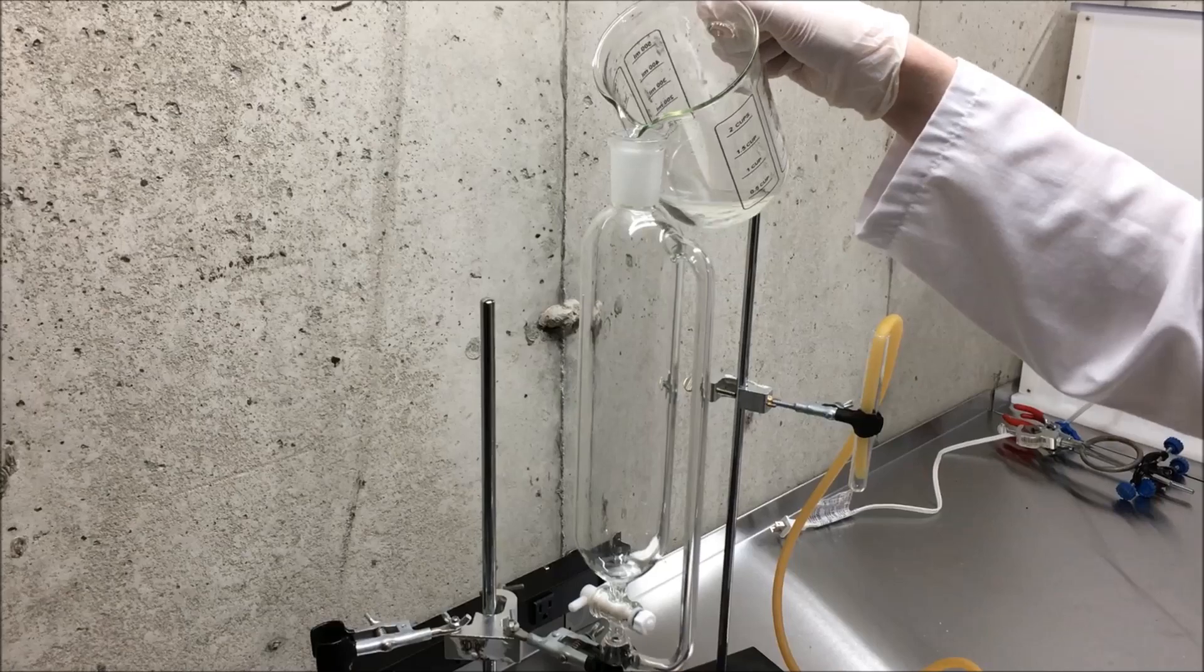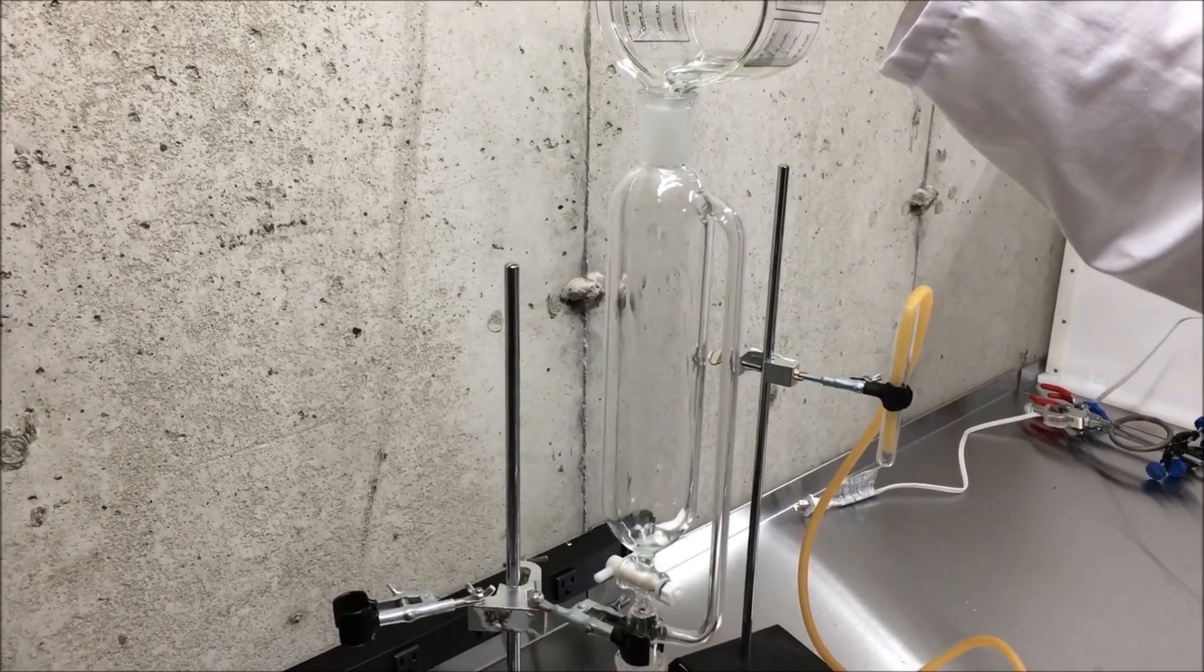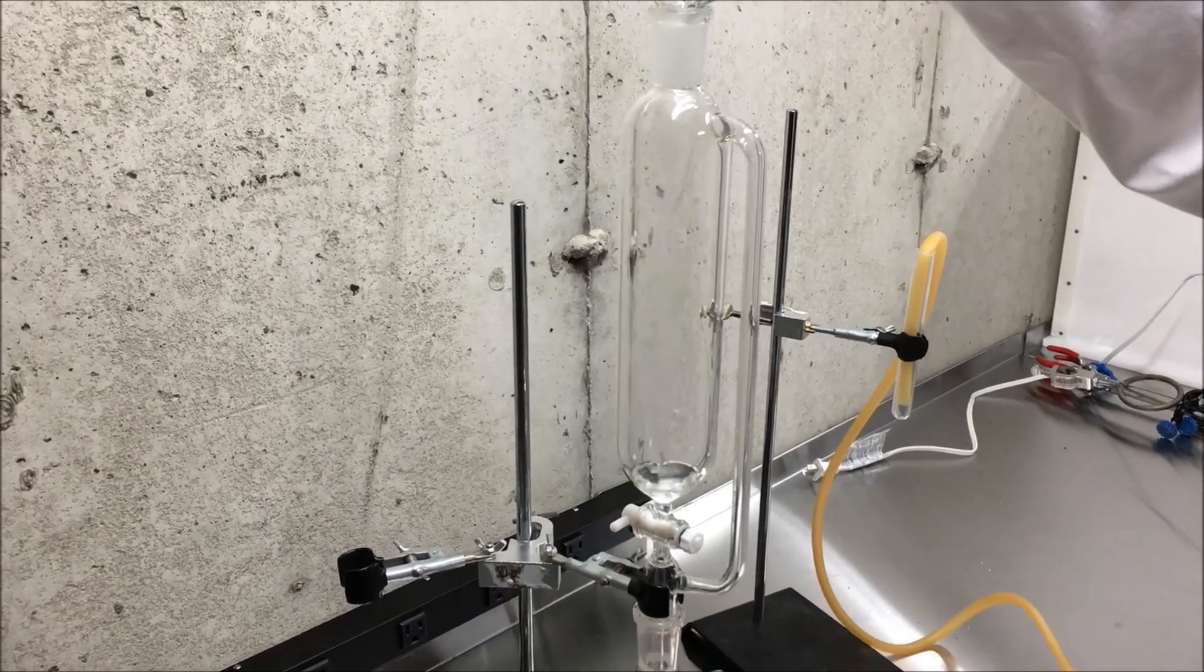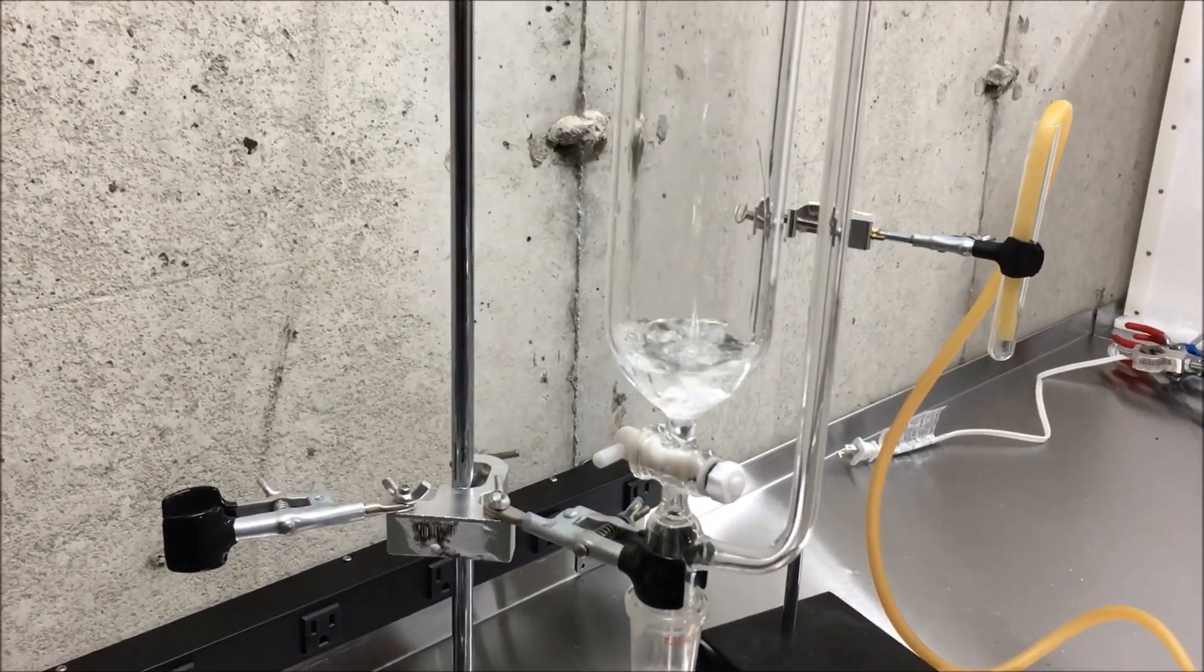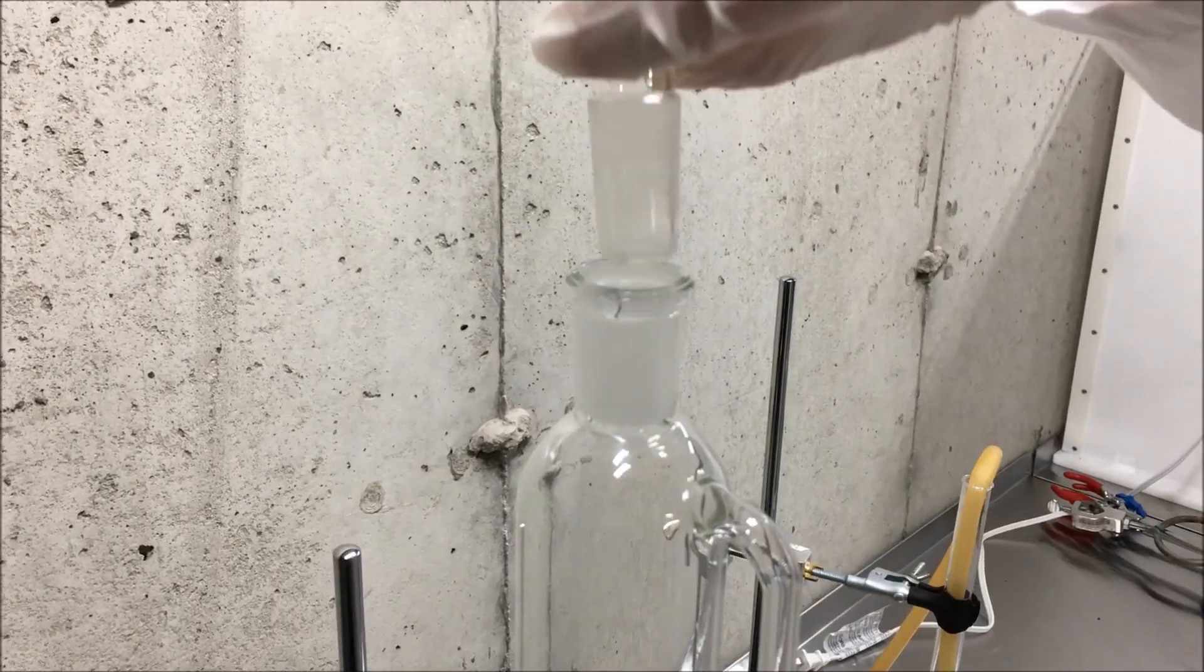I then added around 20 milliliters of around 25% hydrogen peroxide into a pressure-equalized addition funnel. This pressure-equalized part is very important, or else it'll slowly drip through.